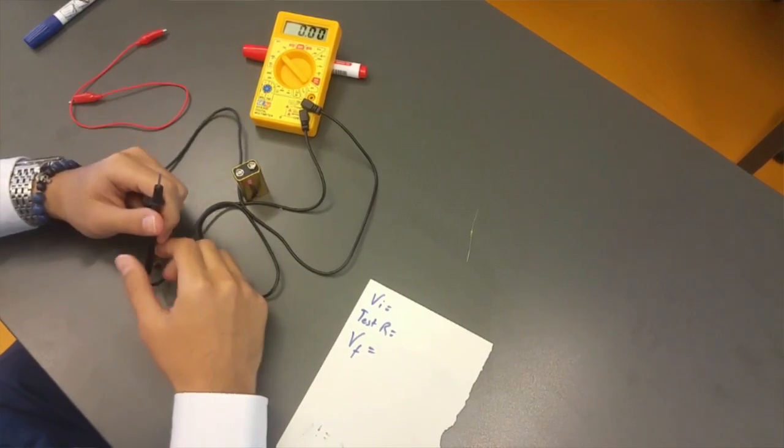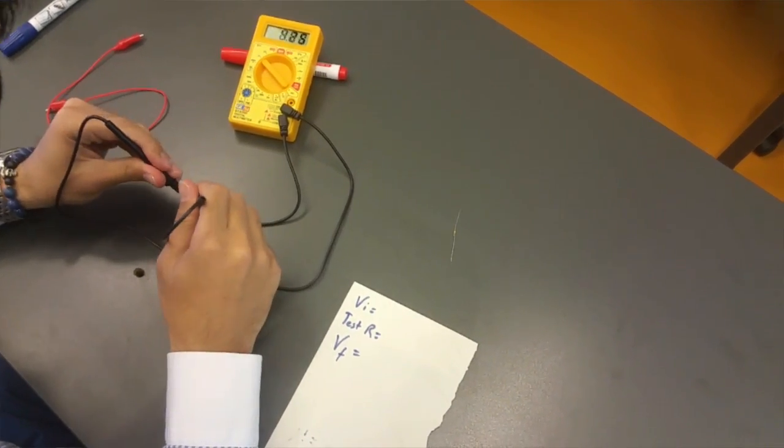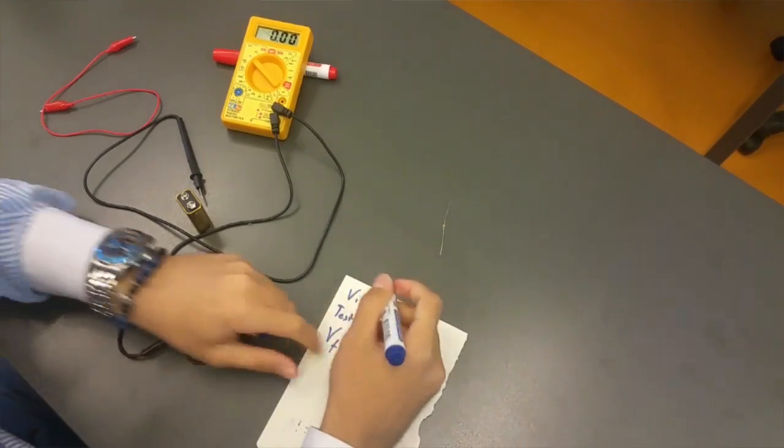The easiest way to do is first testing the battery's voltage and write its magnitude as V initial. It's 9.6V.